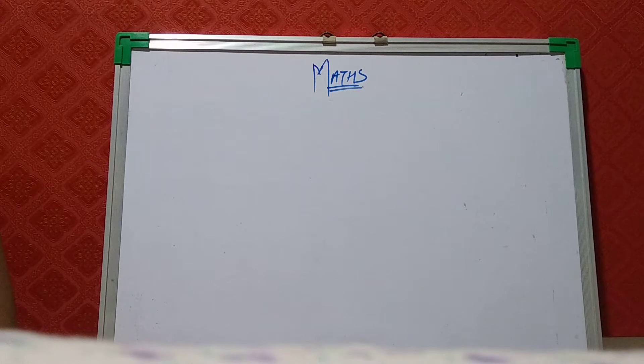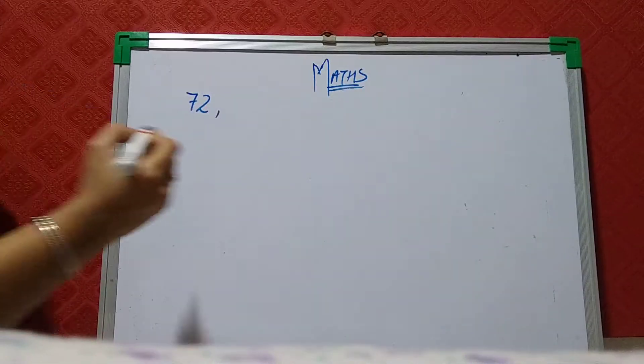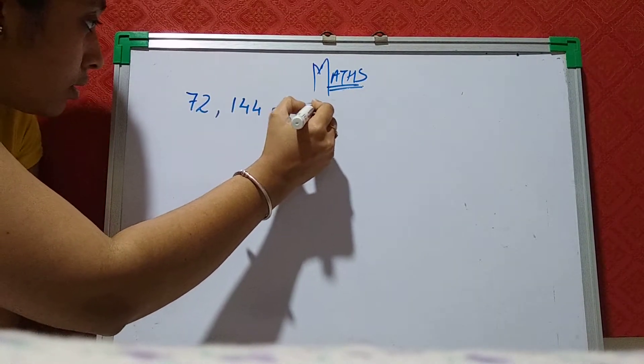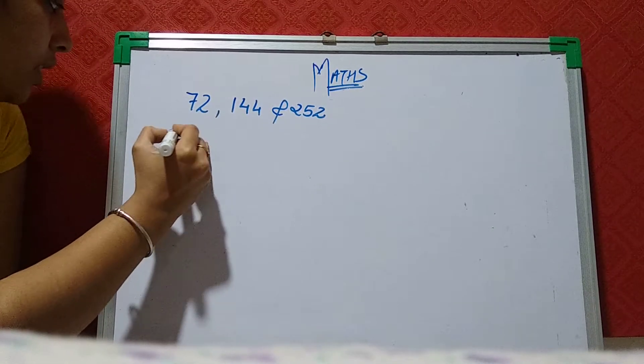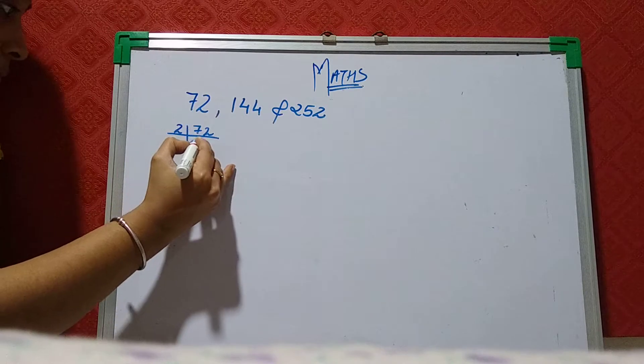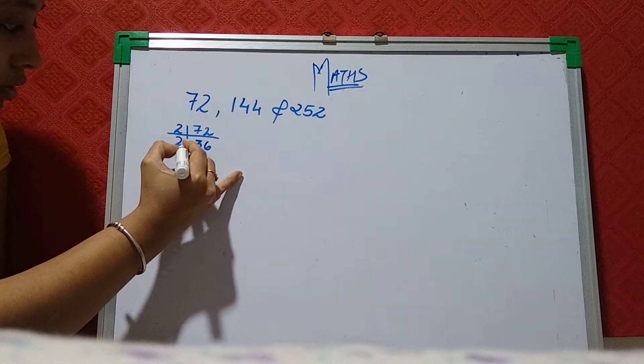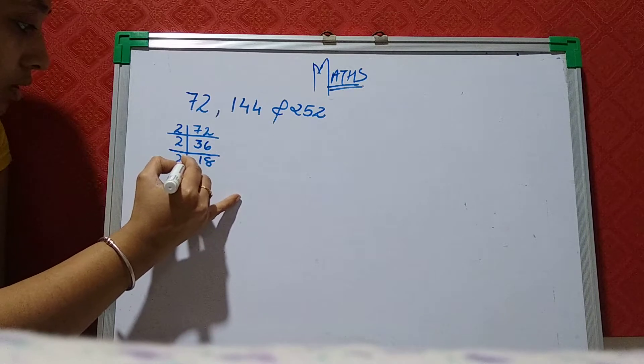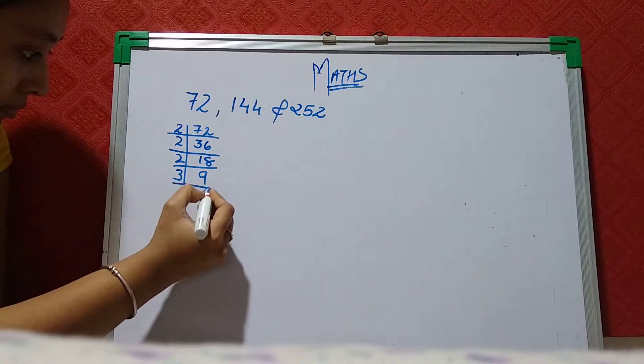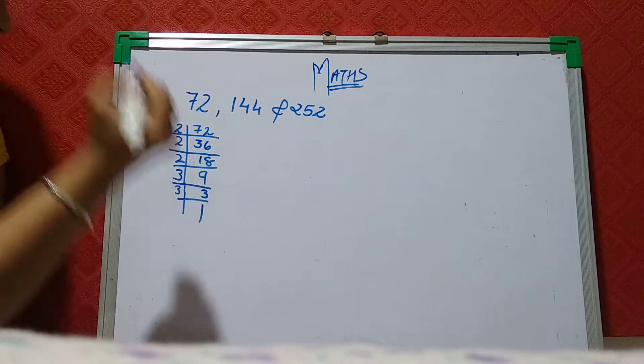Now illustration 1, find the HCF of 72, 144 and 252. If you check 72, it comes in the table of 2. 36, 2s are 72. 18, 2, 9s are 18. 2, 9s are 18 and 3, 3s are 9. 3, 1s are 3, that's it.